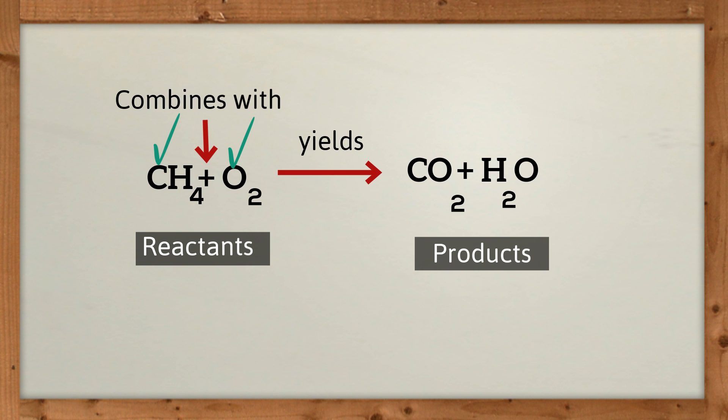The right side of the arrow are your products or what is produced. The products in this equation are CO2, which is carbon dioxide, and H2O, which is water.